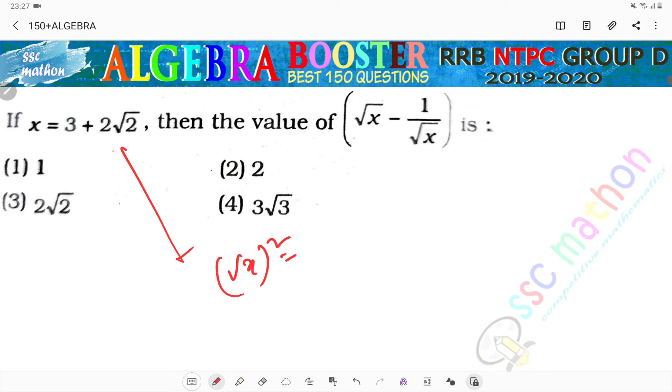Root x squared equals x. Here we're given 3 plus 2 root 2, which we can write as root 2 whole squared plus 1 squared plus 2 root 2.